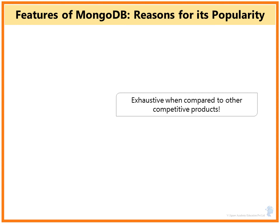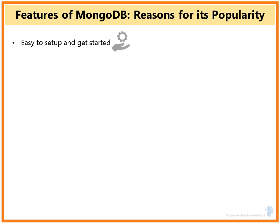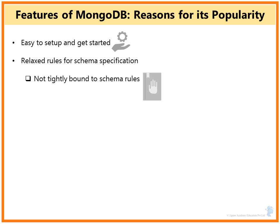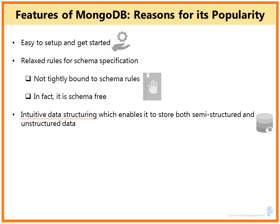Let's look at the key features that make MongoDB one of the most popular NoSQL databases. We'll cover four to five key points. First, it's very easy to set up and get started. It has a relaxed set of rules for schema specification — it's absolutely schema-free. People coming from RDBMS and MySQL will find this a relief. It also supports intuitive data structuring, enabling storage of both semi-structured and unstructured data, as well as structured data — an option not available in traditional RDBMS systems.